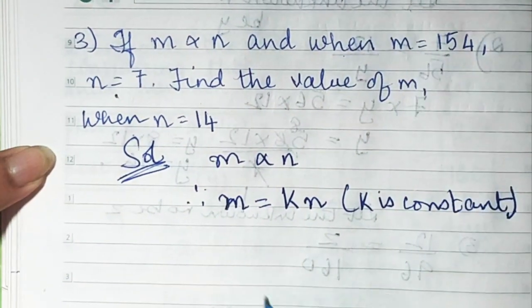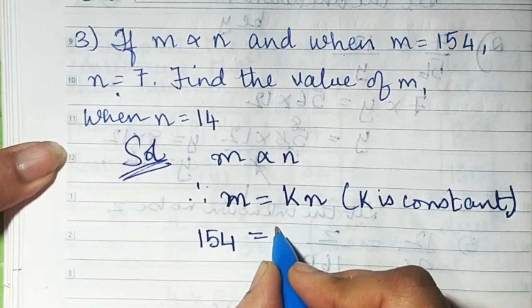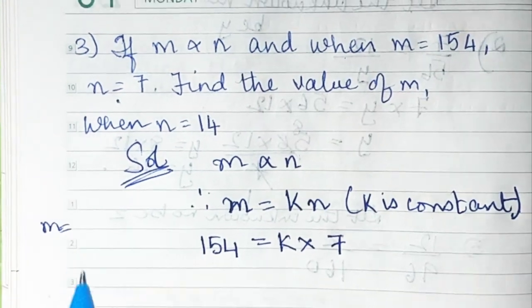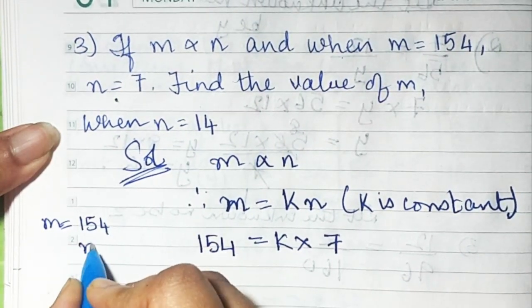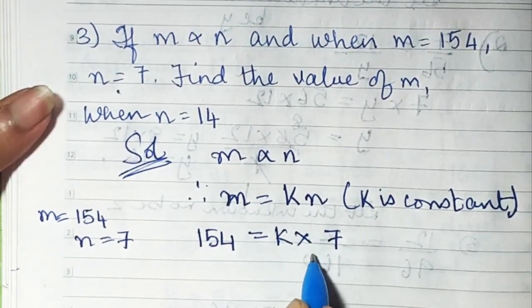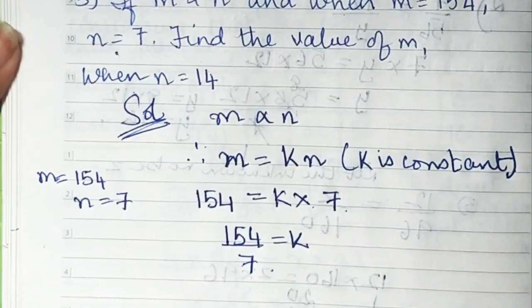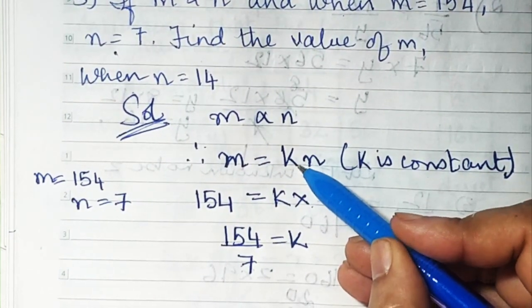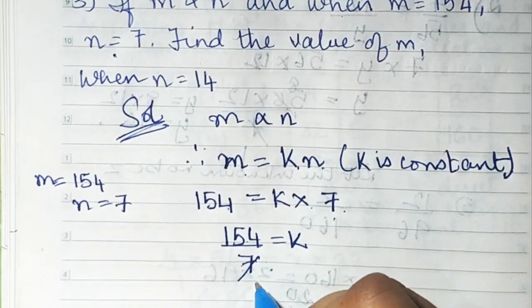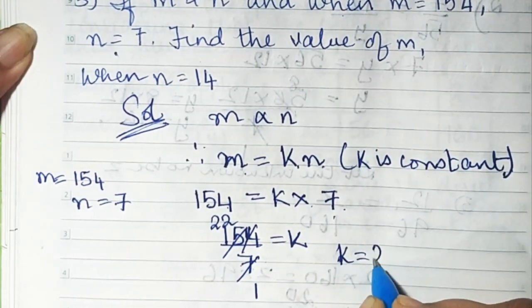To find the constant K, substitute the given values: 154 equals K into 7. So K equals 154 upon 7. Dividing: 7 ones are 7, 7 twos are 14, carry 1, 7 twos are 14. Therefore the value of K is 22.